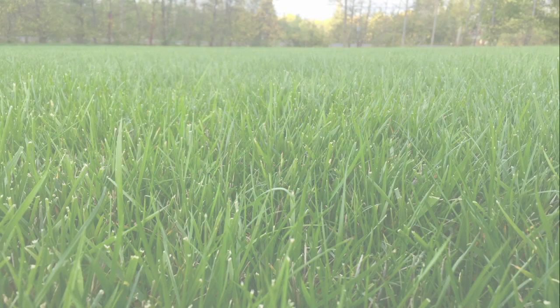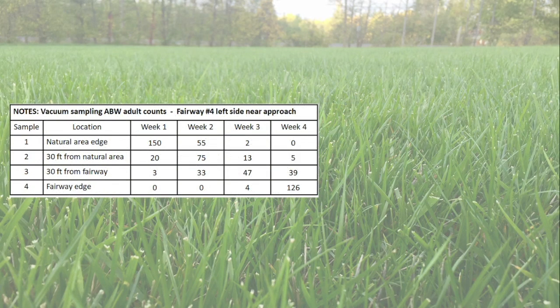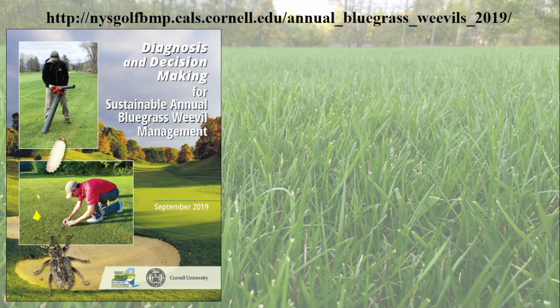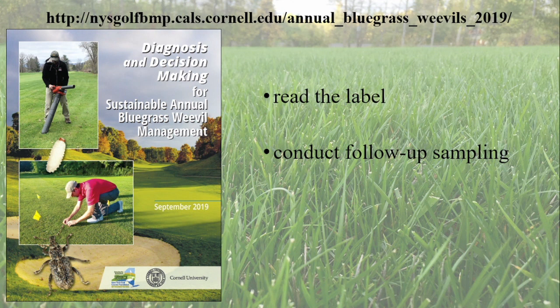Additionally, use your scouting data to limit applications to only those areas where adults were detected. Keep in mind that poor timing and overuse of adulticides against annual bluegrass weevil can result in insecticide resistance. If the decision is made to use an insecticide, be sure to select a product labeled for annual bluegrass weevil adults. One week following adulticide applications, conduct follow-up vacuum sampling to gauge the effectiveness of the treatment and to make informed decisions about the need for additional management. If additional management is necessary, consider rotating to a different active ingredient to reduce the chances for insecticide resistance to develop.